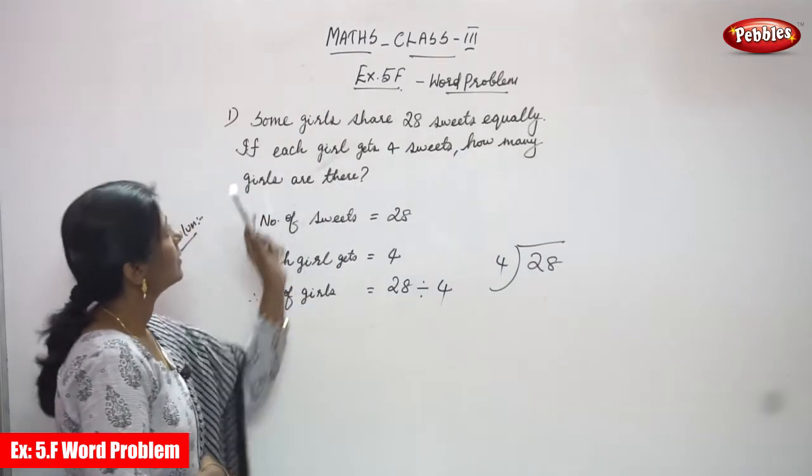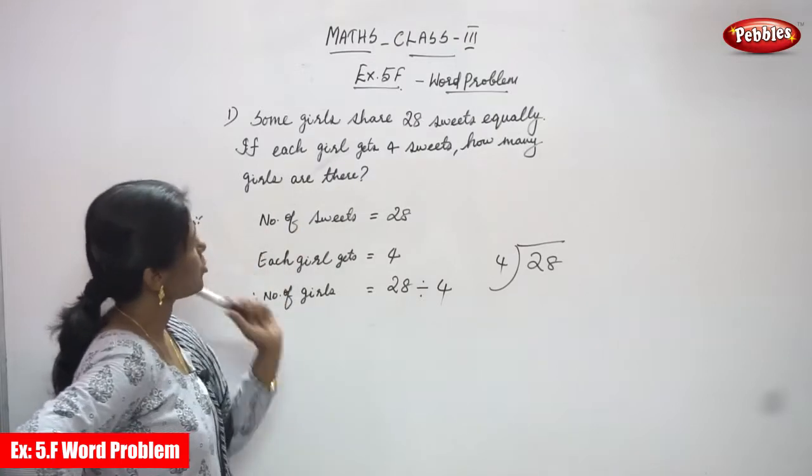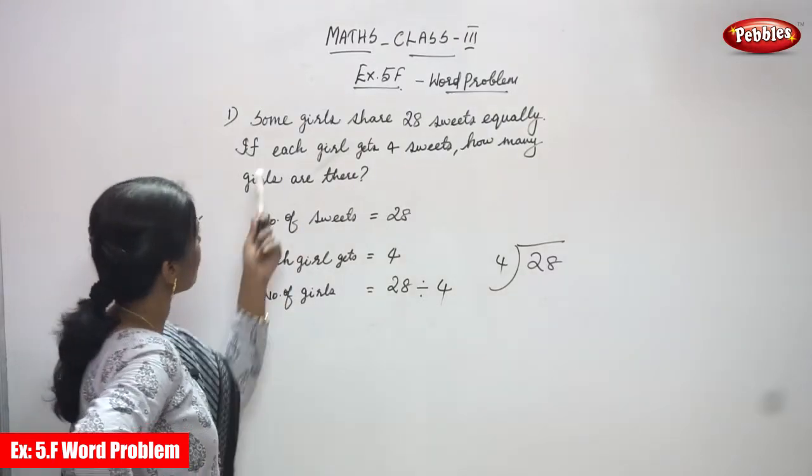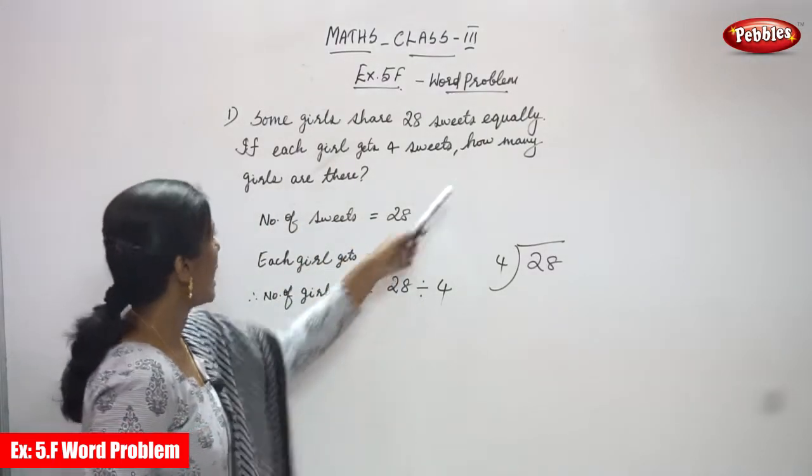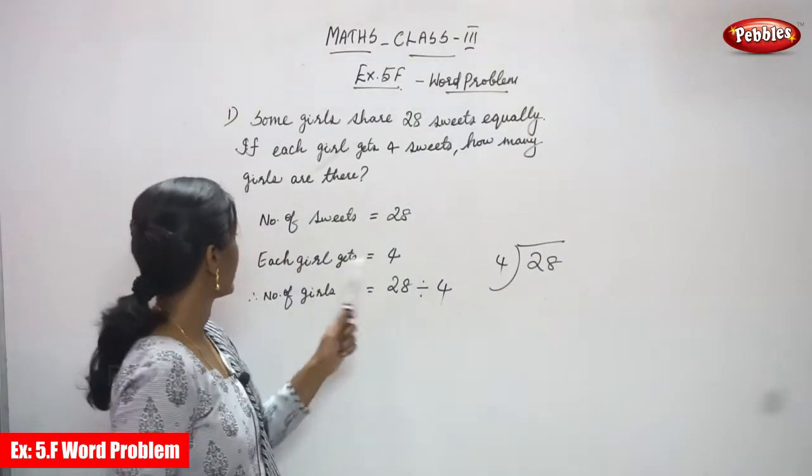Now we are going to see Exercise 5F. It's also a word problem. Some girls share 28 sweets equally. If each girl gets four sweets, how many girls are there? So the total number of sweets is 28.